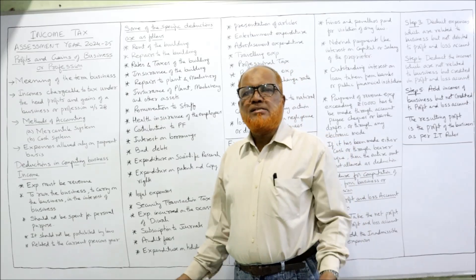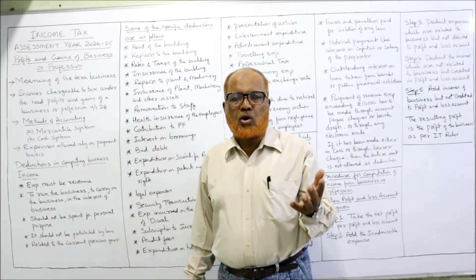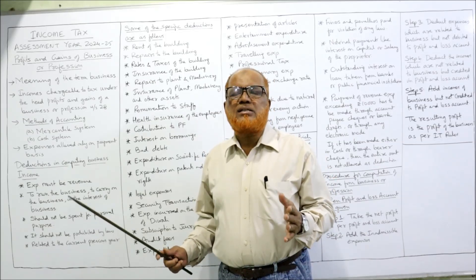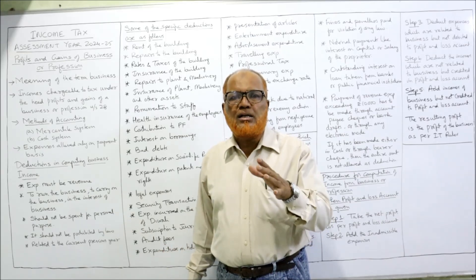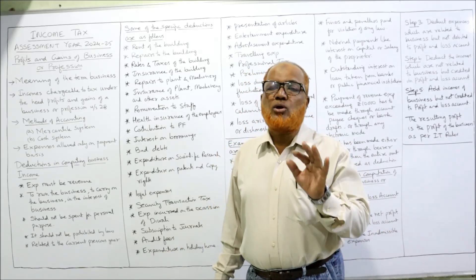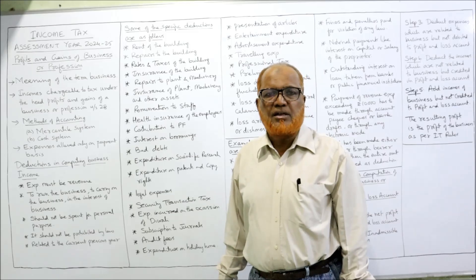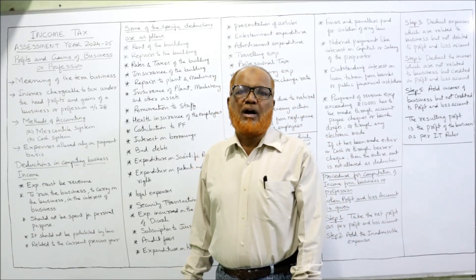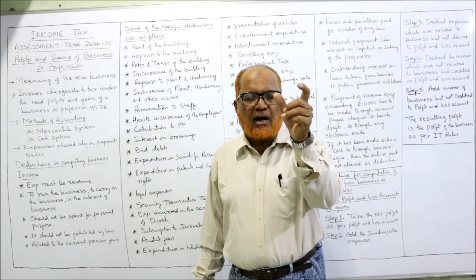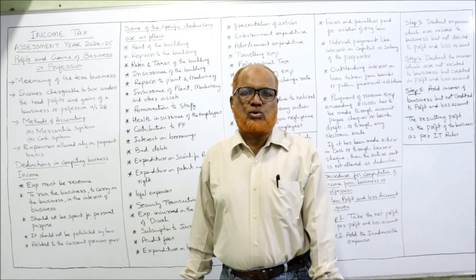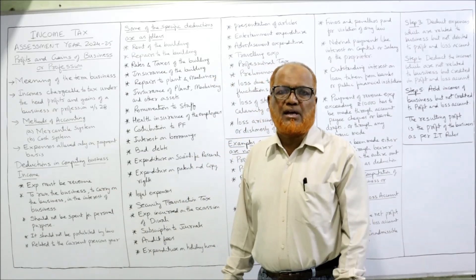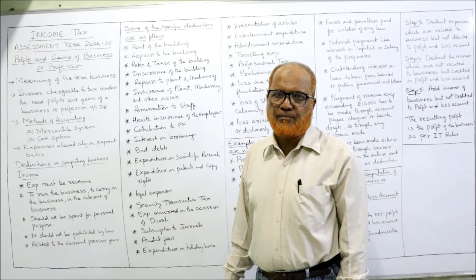First of all, business. Business is any human activity — it includes trade, commerce, or any adventure in the nature of trade or commerce. In simple words, any activity conducted to earn some profit is called business. That is the general meaning. But the Income Tax Act has not defined the term 'business.' It has given an inclusive definition under Section 28, listing the incomes which are taxable under the head Profits and Gains of Business or Profession. You have to go through that list in your textbook or in the previous year's video.